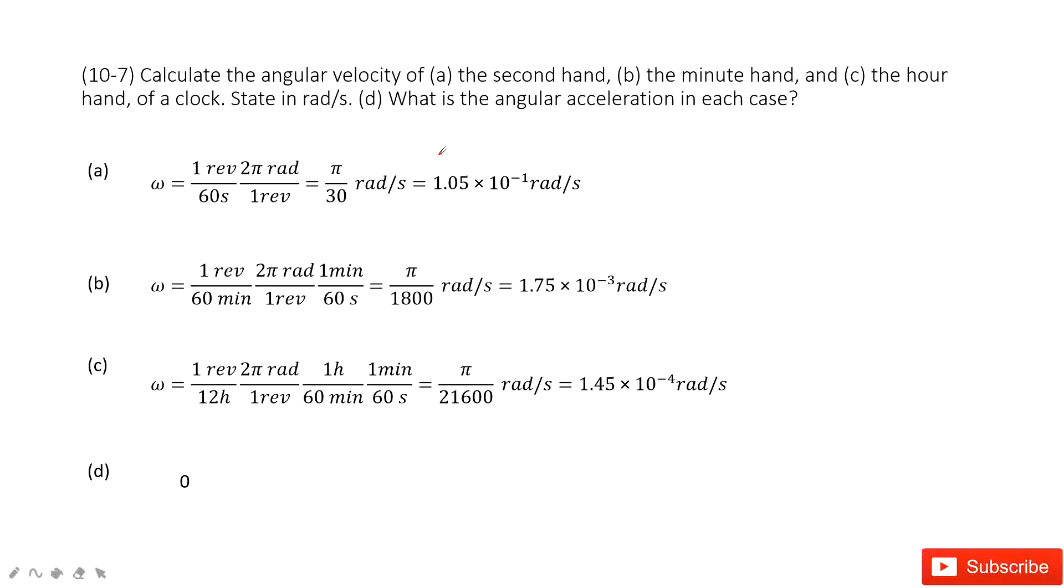As you can see, we need to find the angular velocity for the second hand, the minute hand, and the hour hand of a clock. So how can we do that?